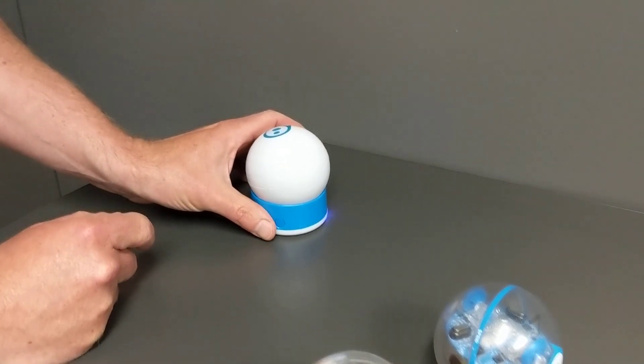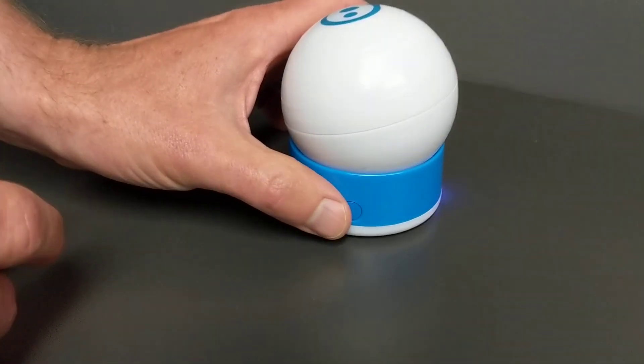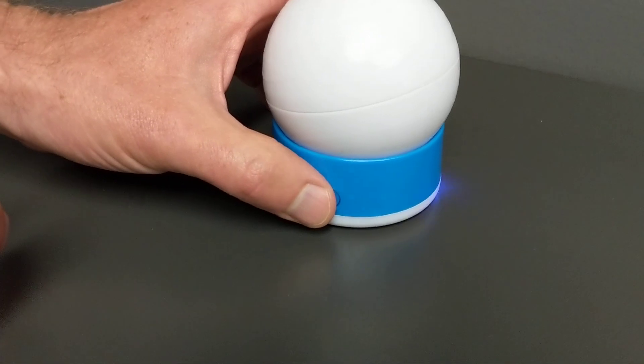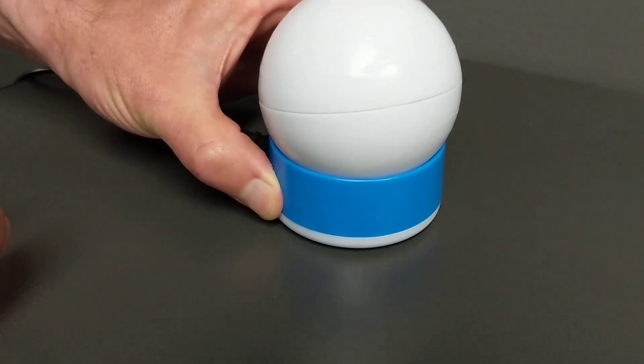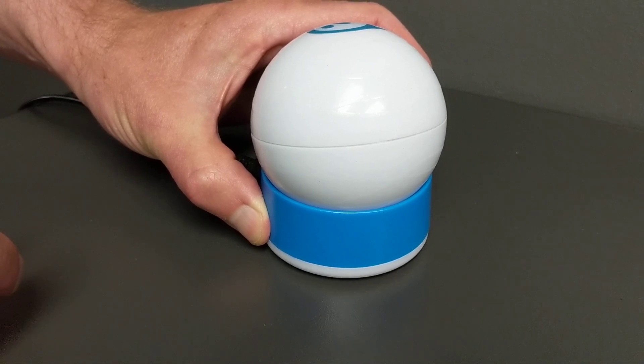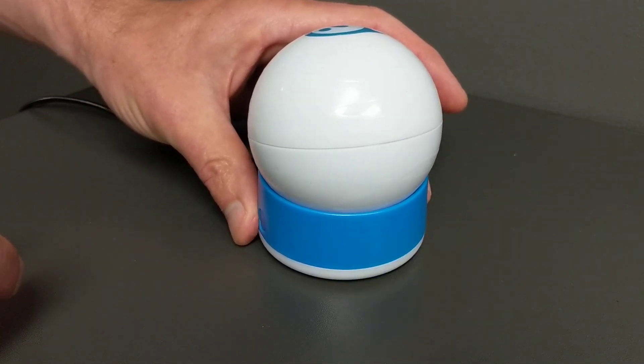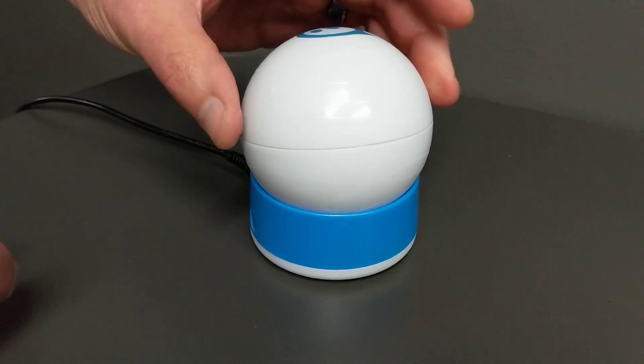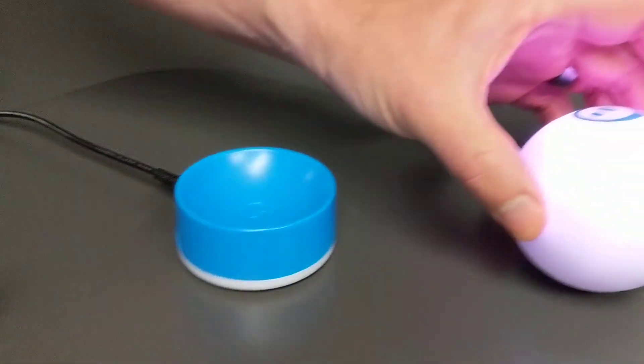In order to reset, there's always a button at the side of the base, and I'm going to hold that button down with my fingers, and the Sphero should flash. This one's not flashing for me, this is the 2.0 model, but that will reset the Sphero.